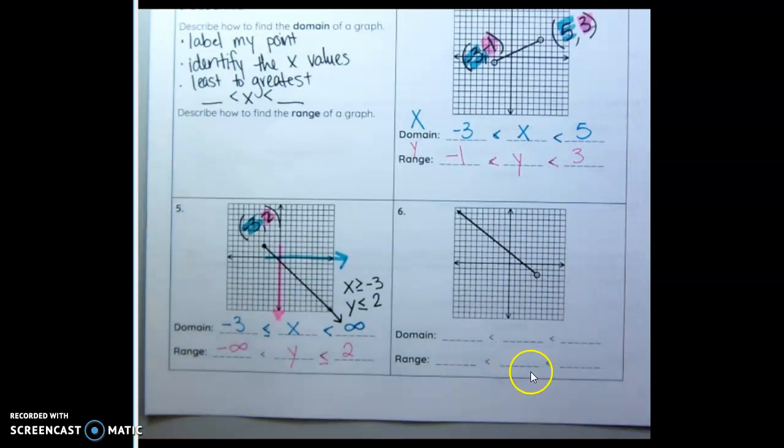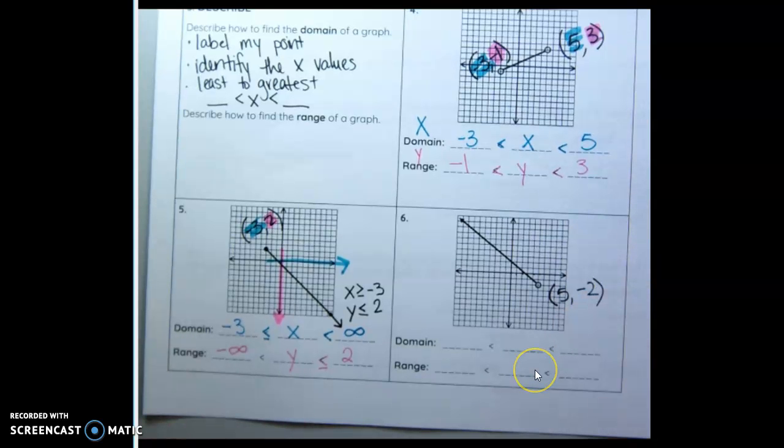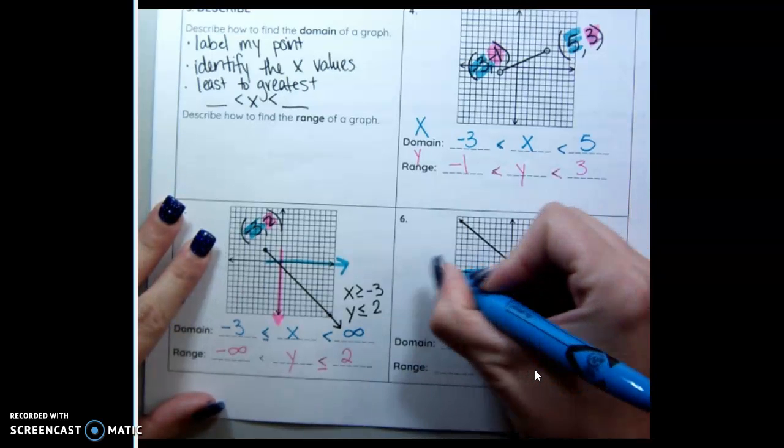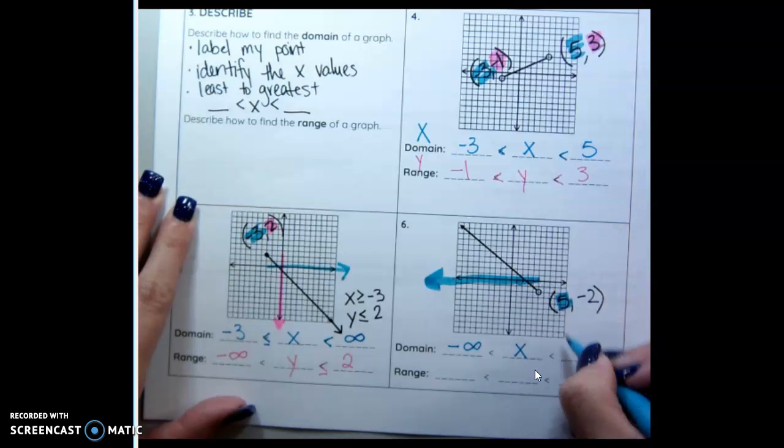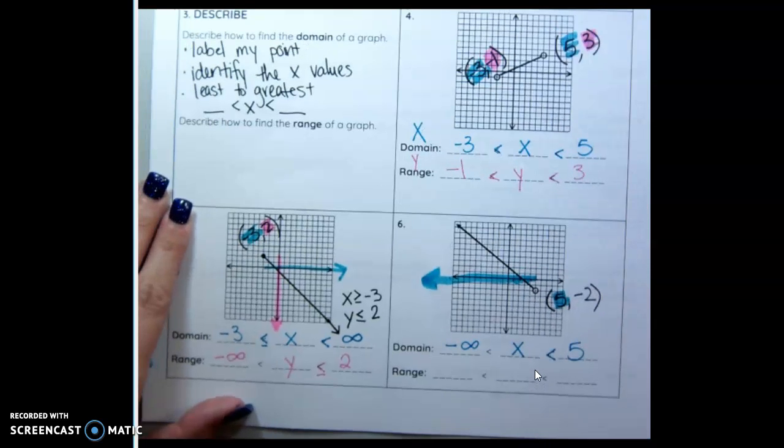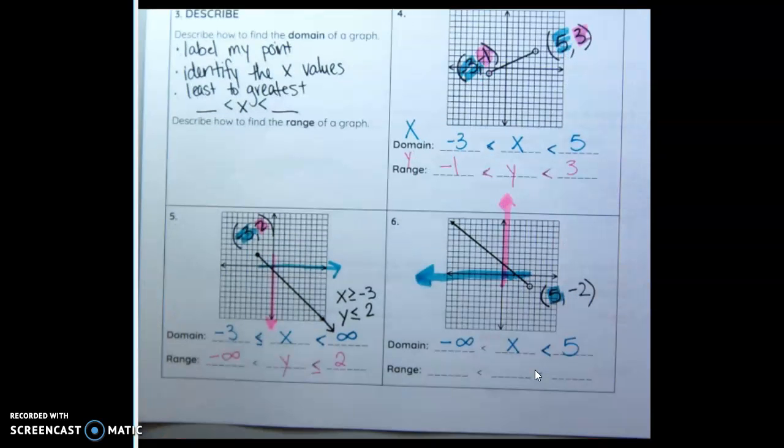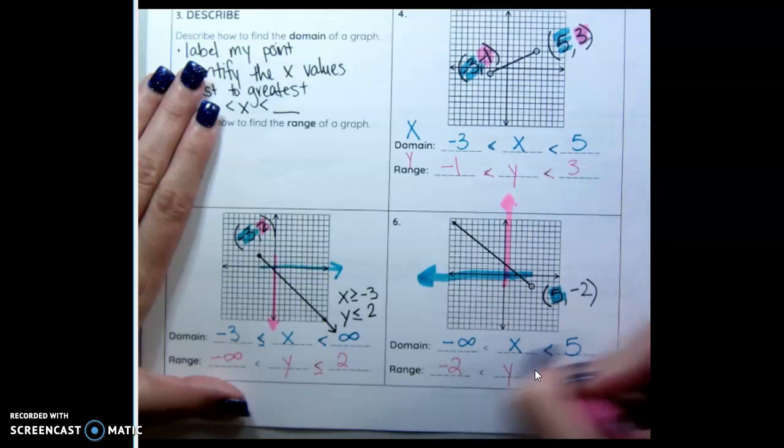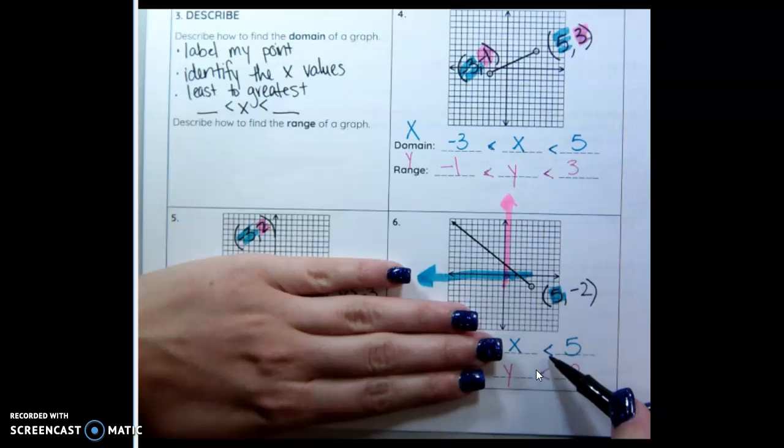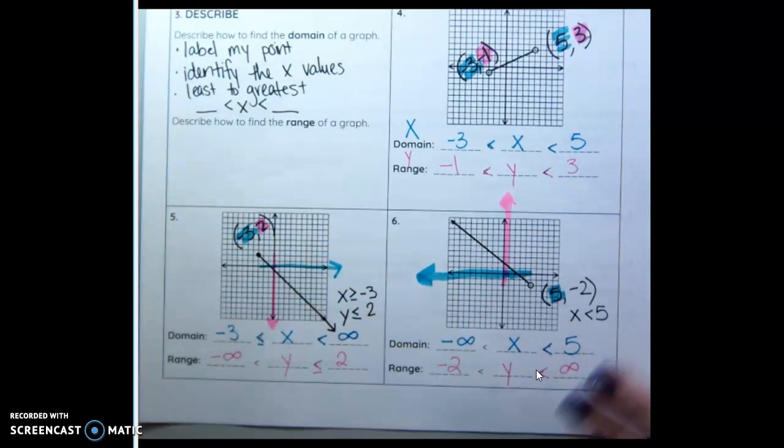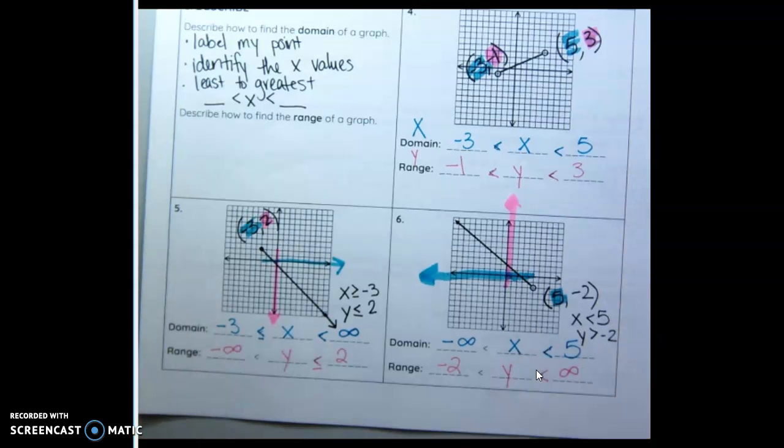Those are the simplified ways. Let's do number 6. Same thing. Label my point. X values first. I have 5. And this is going negatively forever on my x values. So that's negative infinity. x goes in the middle. This is an open circle. So it stays like that. And 5 is the highest it'll go. Now let's do my range. The lowest it'll go is negative 2. Because it goes up forever. So negative 2, y goes up forever. Let's write these simplified. My domain is x is less than 5. My y is greater than negative 2. Y is everything greater than negative 2.